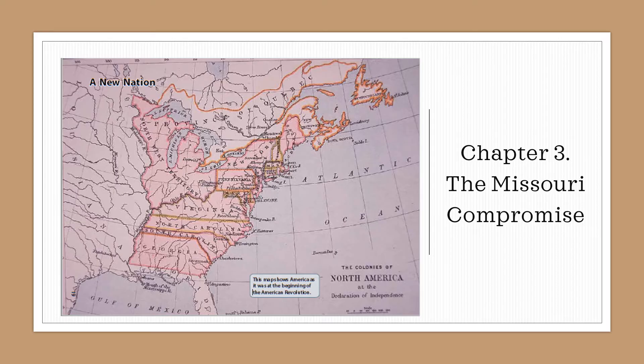Here is a picture called 'A New Nation.' This map shows America as it was at the beginning of the American Revolution. As you can probably tell, there are not a lot of states, but there are a lot of territories shown in this picture.